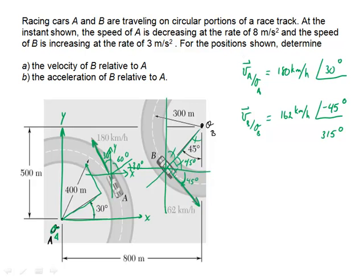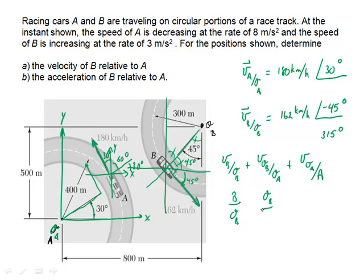So there are the two velocities, but how do I find the velocity of B relative to A? This would be the velocity of B with respect to its origin O sub B, plus the velocity of O sub B relative to O sub A — I know to do that because of the cancellation of O sub A. Plus the velocity of O sub A with respect to A. This gives me B over O sub B, O sub B over O sub A, O sub A over A. The O sub B cancel, the O sub A cancel, and we're left with B with respect to A — the velocity of B relative to A.